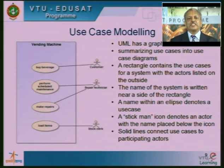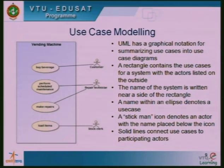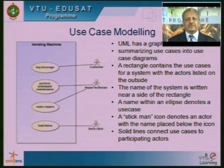This is an example of use case modeling. UML has a graphical notation summarizing use cases into use case diagrams. Use case diagrams have three symbols: the actor symbol, the use case symbol, and the lines, which are the associations. A rectangle contains the use cases for a system, with the actors listed on the outside. The example shown here is a vending machine. A vending machine may have multiple types of users or actors — they may be customers, repair personnel, or loaders who load the system with the beverage or whatever it is.